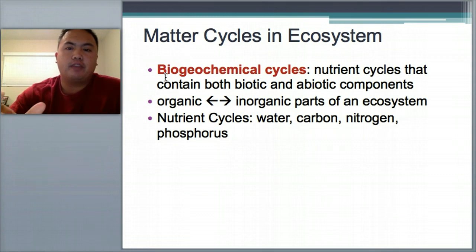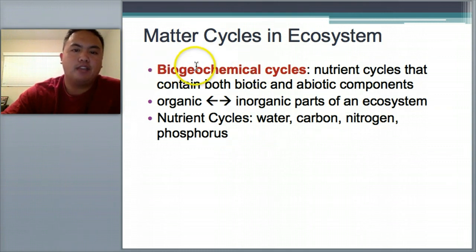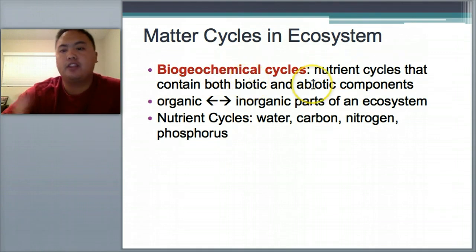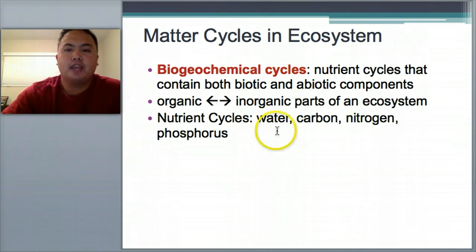We'll talk briefly about each of these cycles and go more in depth later. Matter is cycled — it's usually called biogeochemical: 'bio' meaning life, 'geo' meaning rock, 'chemical' meaning the chemicals. Nutrient cycles contain both biotic (living) and abiotic (non-living) components, switching between organic and inorganic parts of the ecosystem. There are four cycles you need to know: the water cycle, carbon cycle, nitrogen cycle, and phosphorus cycle.